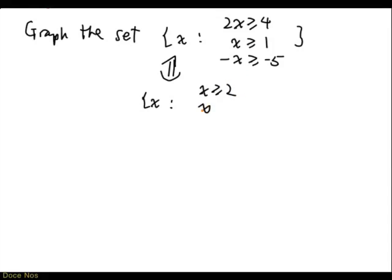Well, x greater than or equal to 1 is the same as x greater than or equal to 1. Nothing needs to change. But minus x greater than or equal to minus 5, we can rewrite that as x less than or equal to 5, right? If you multiply both sides by minus 1, you change the sense of inequality so you get x less than or equal to 5.